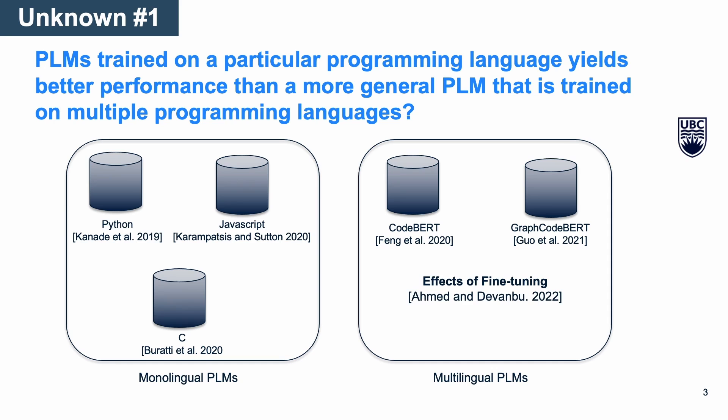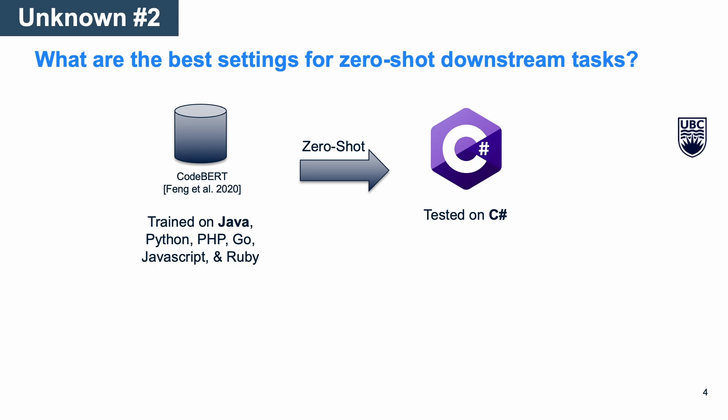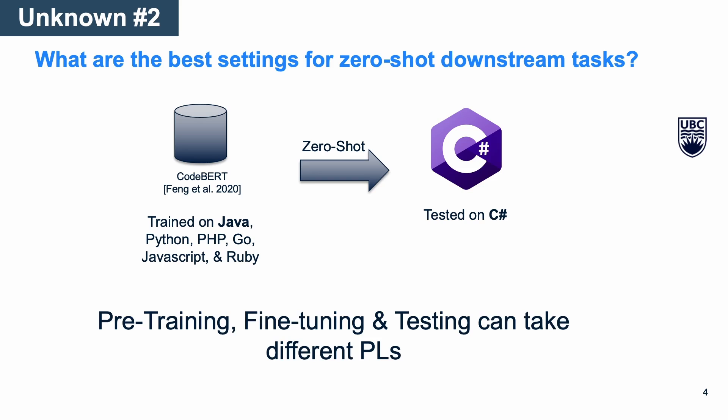A closely related work by Ahmed and Divanbu studies the effects of fine-tuning multilingual pre-trained models. However, some programming languages are inherently different, so utilizing a single multilingual model may not always yield the best performance. Additionally, the zero-shot setting in previous work is lightly studied. A small study on zero-shot code summarization was conducted using CodeBERT, where the unseen language was C#, which has a similar structure to Java—one of the languages used to pre-train CodeBERT. Other languages may have very different structures, and during pre-training, fine-tuning, and testing, different programming languages may be used.